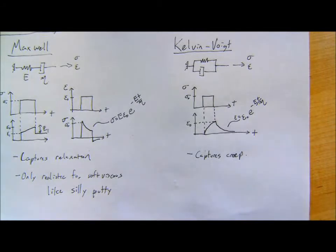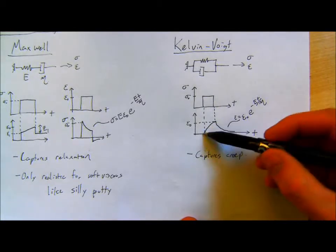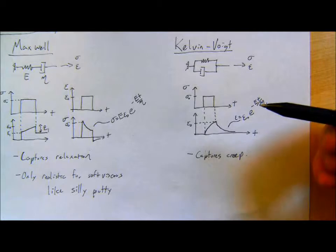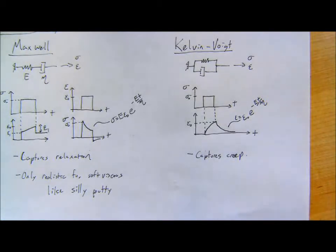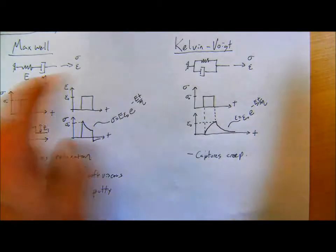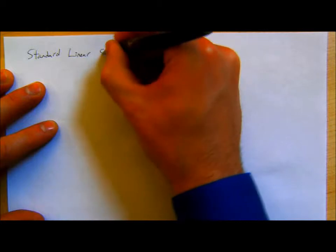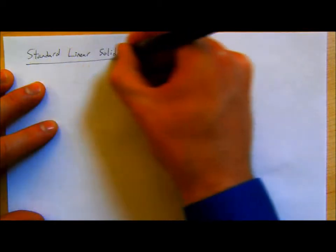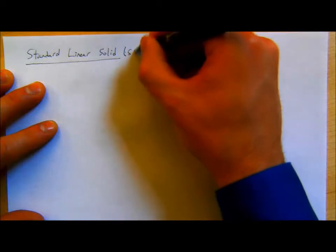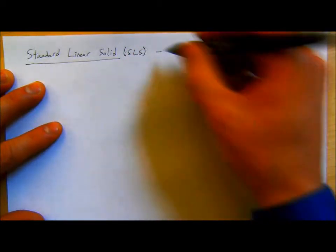The Kelvin-Voigt model is also not super realistic for most engineering materials, because most materials don't just have a gradual creep — there's some elastic response and then some time-dependent creep response. We need a model that combines both aspects. Logically, we can mash them together. There's a model called the Standard Linear Solid, or SLS, also sometimes referred to as the Zener model.